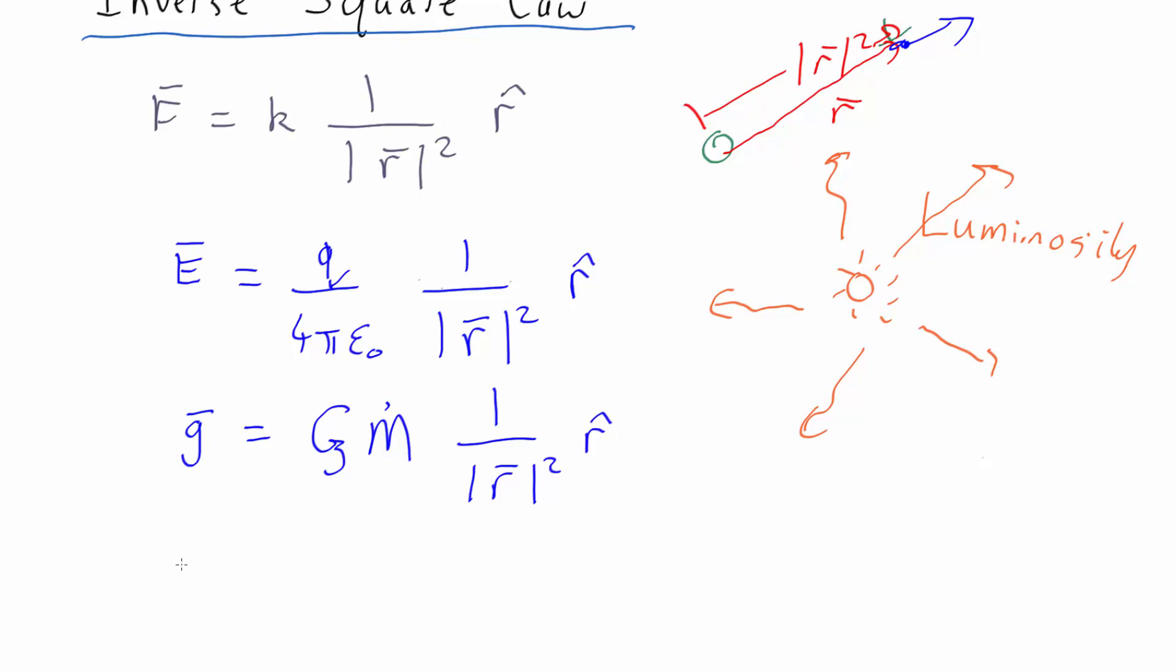So we can call a vector of the intensity at some point, which is the amount of radiation traveling somewhere, and that would equal the luminosity over 4 pi - that's the constant - 1 over mod r squared r hat.